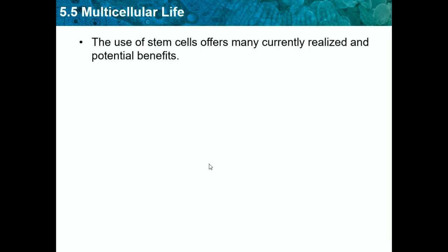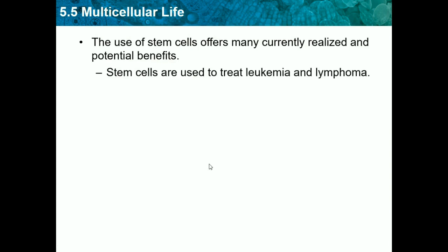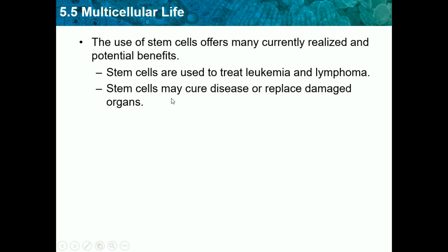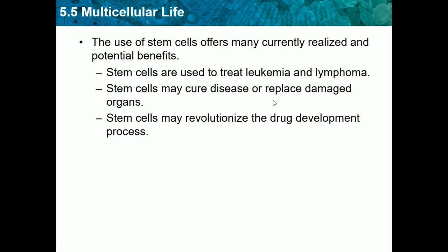The use of stem cells offers many currently realized and potential benefits. Stem cells are used to treat leukemia and lymphoma, which are types of blood disease. Stem cells may cure disease or replace damaged organs — for example, if a muscle cell is damaged and won't grow back, stem cells can be used to grow new muscle cells. Stem cells may also revolutionize the drug development process, helping us find more information about drugs and develop them more easily.